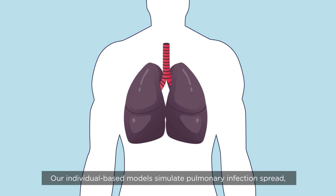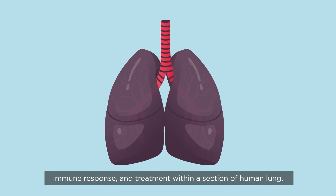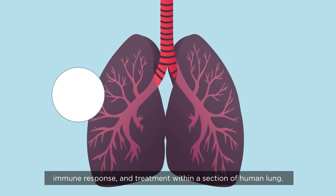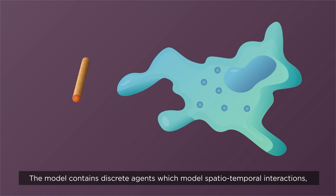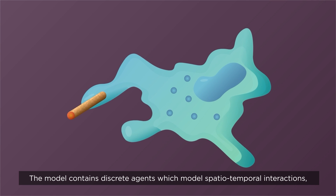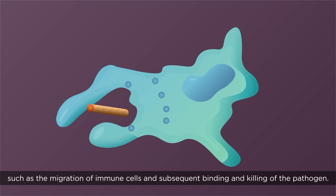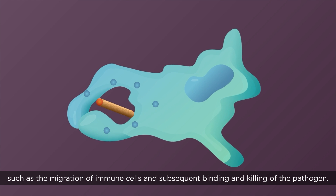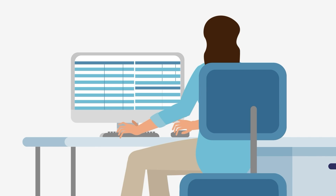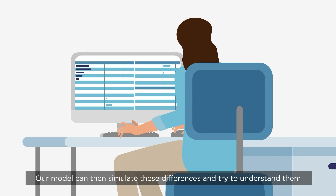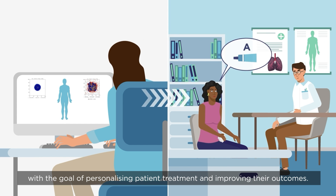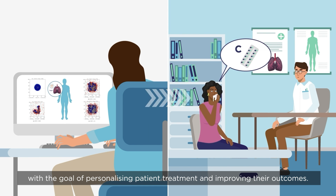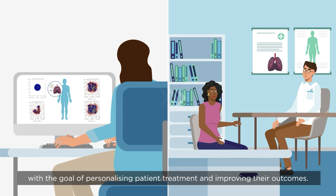Our individual-based models simulate pulmonary infection spread, immune response and treatment within a section of human lung. The model contains discrete agents which model spatiotemporal interactions, such as the migration of immune cells and subsequent binding and killing of the pathogen. Our model can then simulate these differences and try to understand them, with the goal of personalising patient treatment and improving their outcomes.